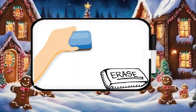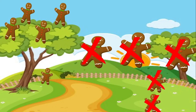4 and 1 more is 5. Erase your board and cross out the 5 gingerbread men. We're going to pretend that they ran away. Now I want you to circle 2 gingerbread men.